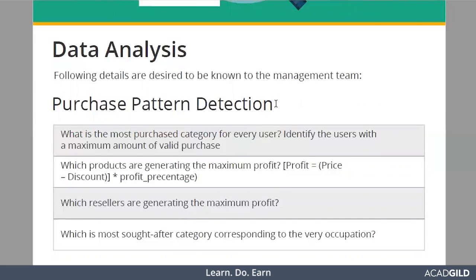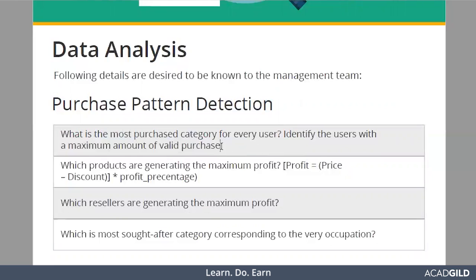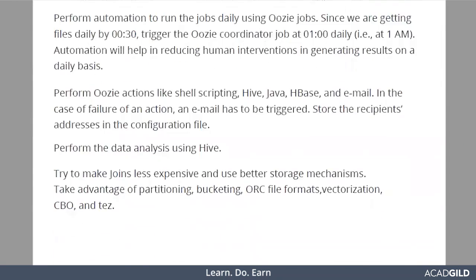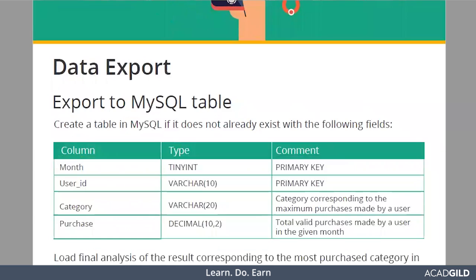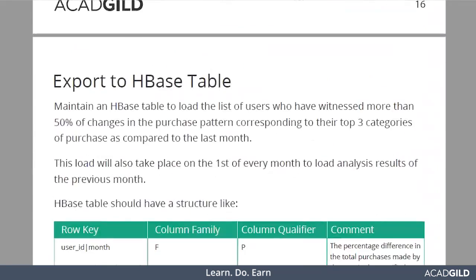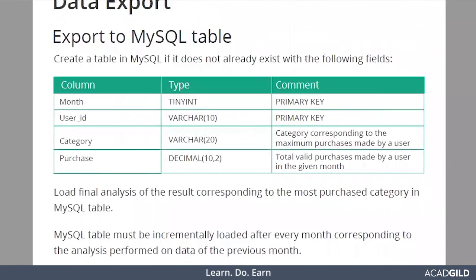Once validation is done, various analyses are performed. The first analysis is purchase pattern detection — identifying the most purchased category by every user, as well as the biggest products. We also have fraud detection analysis, such as which user has the most returns and what valid purchases that user made. After analysis is complete, we need to export the data to either MySQL or a NoSQL database like HBase. We will be showing how to export the data to MySQL.